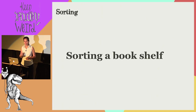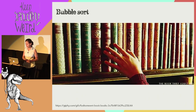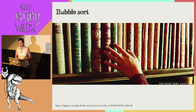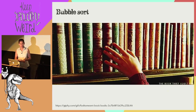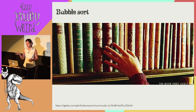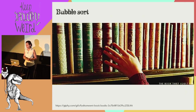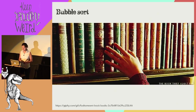Imagine we want to alphabetize a bookshelf. The first sorting approach — a natural one — is to run across the shelf looking for out-of-order items, for example Tolkien followed by Adams, and switch them. Put Adams in front of Tolkien and continue scanning. When we reach the end, we start again, and when we find no more out-of-order pairs, we're done. This is called bubble sort, and it's not very efficient.